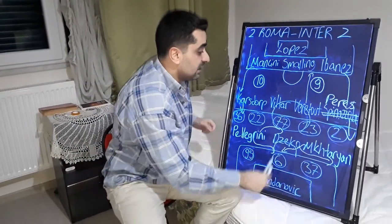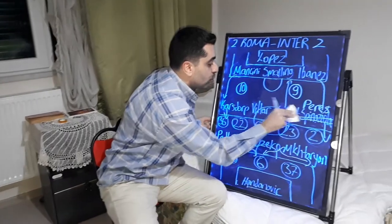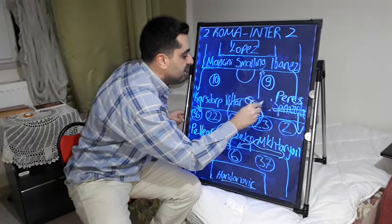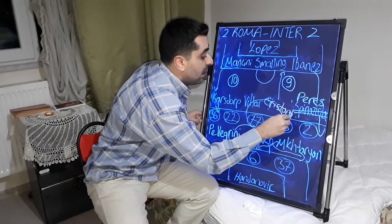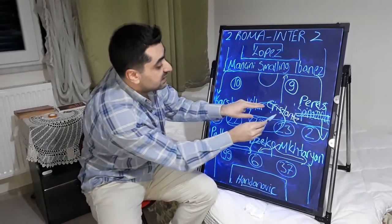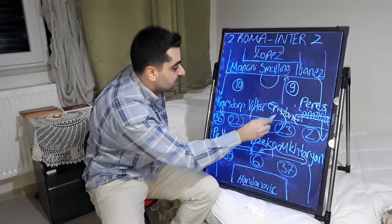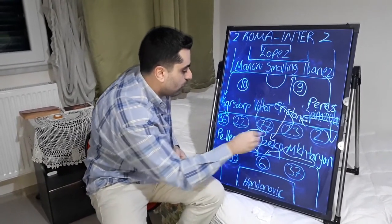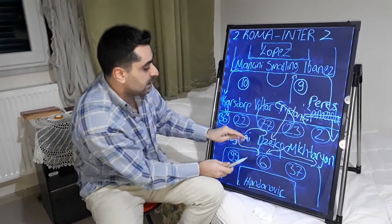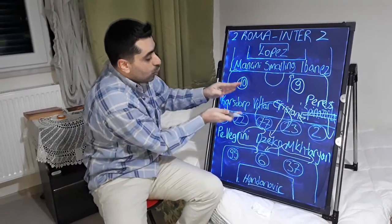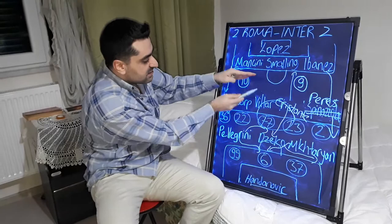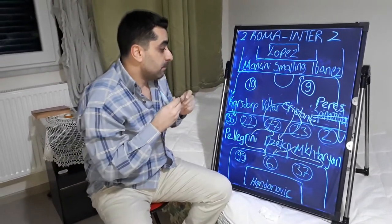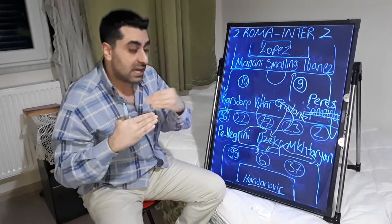And after Veretout out and Cristante in, this substitution made Roma midfield stronger. And Cristante played more offensively. He played close to Dzeko, Pellegrini and Mkhitaryan. And Villar played more defensively in balance. And Roma played better to the end of the game.